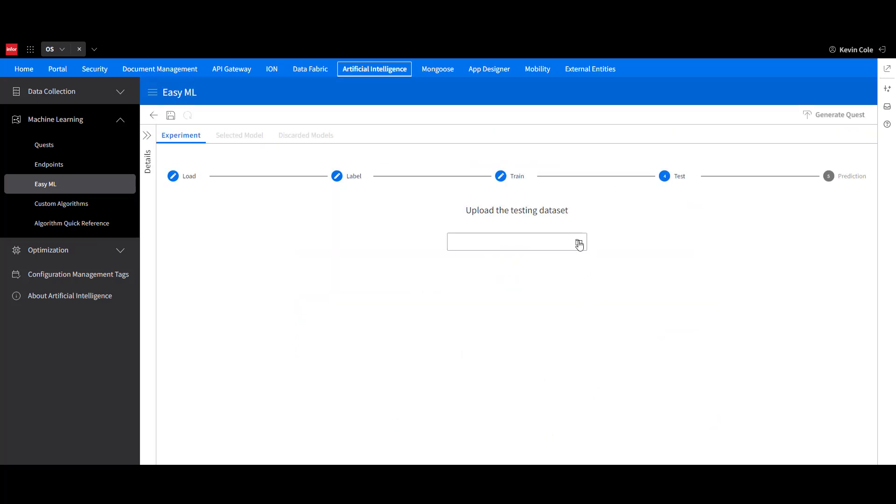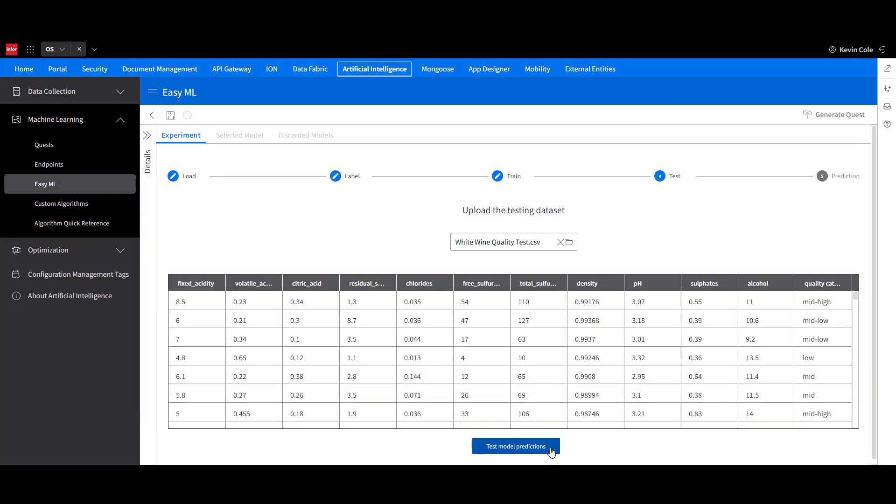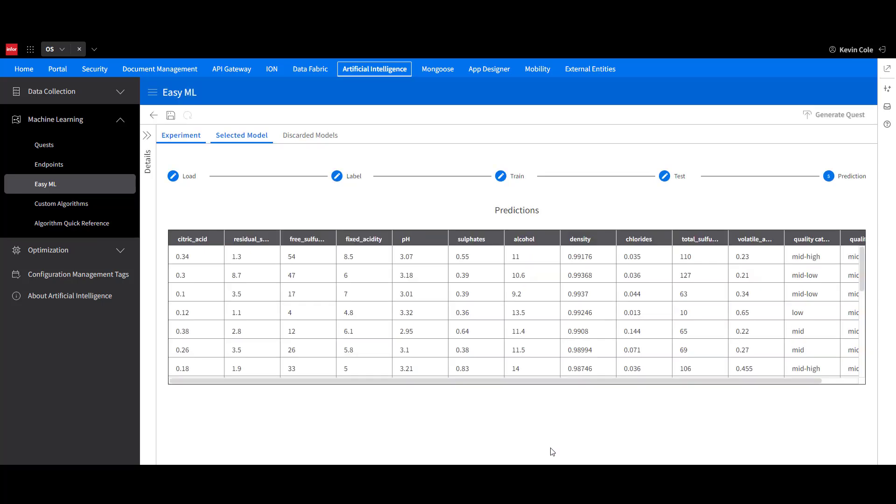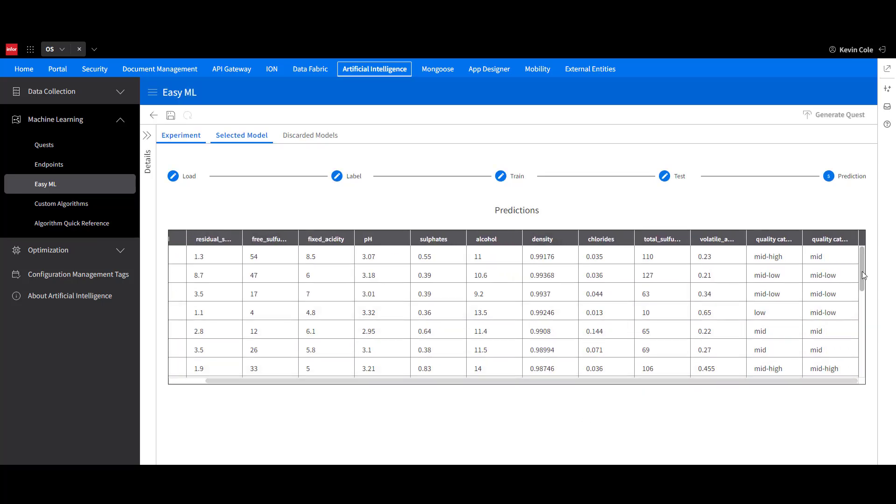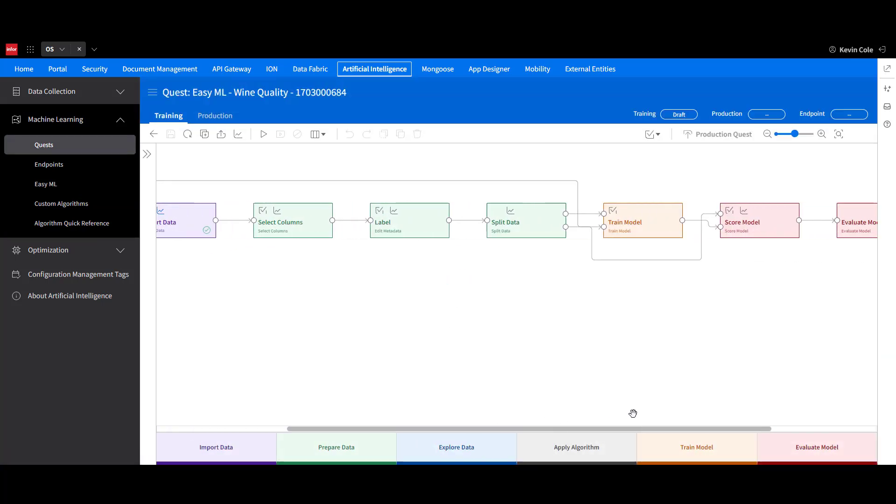Moving forward to test the model, we can use a test data set. After reviewing the predictions, we can save them. Optionally, we can also generate a quest for further enhancing and deploying. This is valuable because once an endpoint is deployed, it can be accessed through the API gateway by any application, and it can draw data from the data lake, which we couldn't do as part of this development.